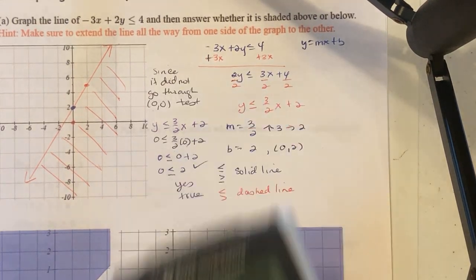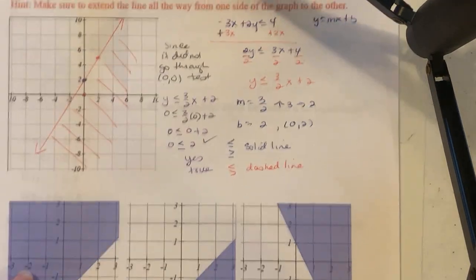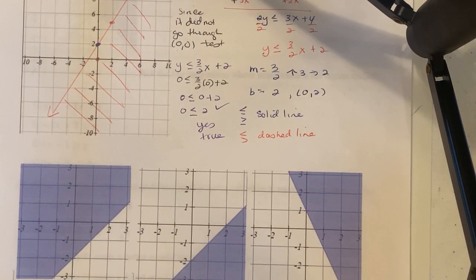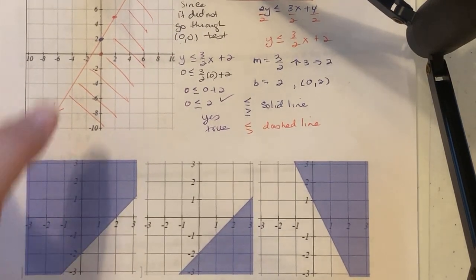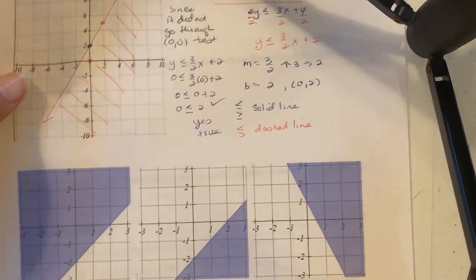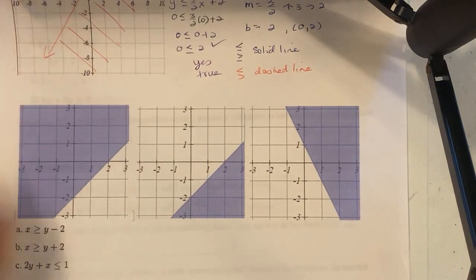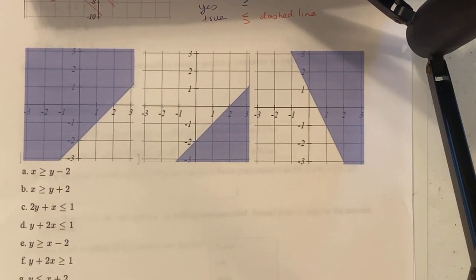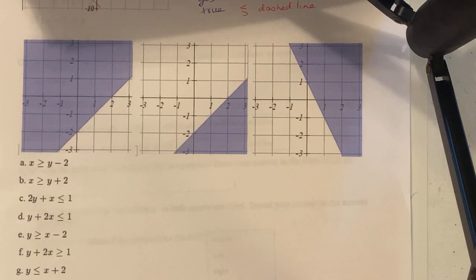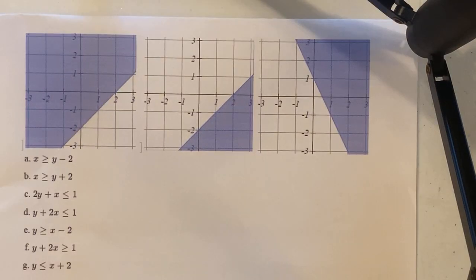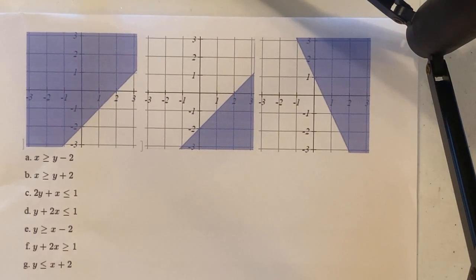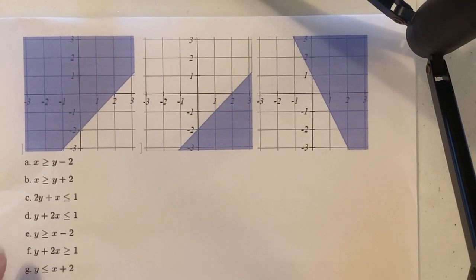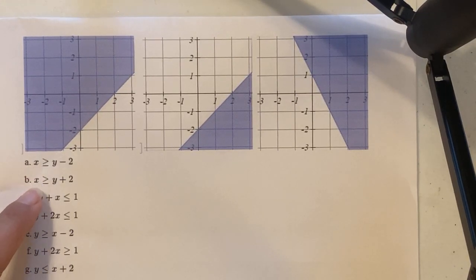Moving on to the next example. This one has multiple equations and they want us to match each equation to the correct graph. Notice that some equations say x is greater than or equal to, or x is greater than — they're not already in y equals mx plus b form, so we need to rewrite them.